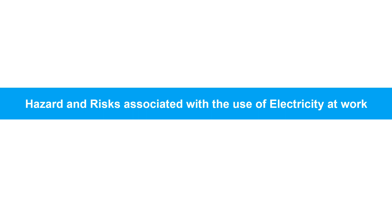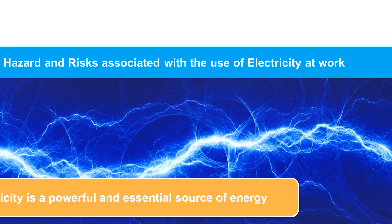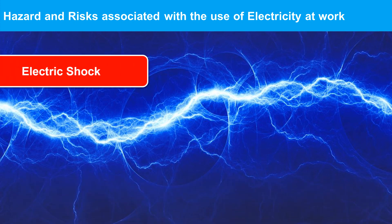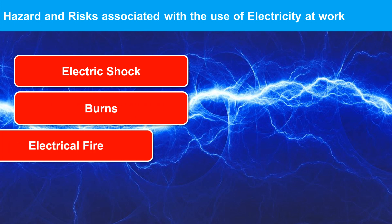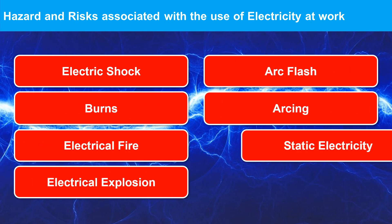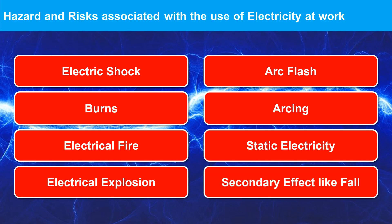Let us now understand the hazards and risks associated with the use of electricity at work. Electricity is a powerful and essential source of energy, but it can also be dangerous if not handled properly. The hazards caused by electricity include electric shock, burns, electrical fire, electrical explosion, arc flash, arcing, static electricity, and secondary effects like falls.